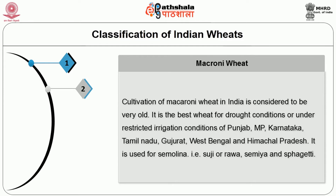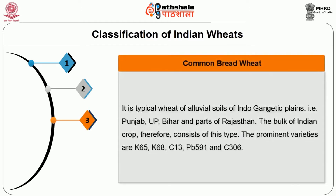Next is macaroni wheat. Cultivation of macaroni wheat in India is considered to be very old. It is the best wheat for drought conditions or under restricted irrigation conditions of Punjab, Madhya Pradesh, Karnataka, Tamil Nadu, Gujarat, West Bengal and Himachal Pradesh. It is used for semolina.